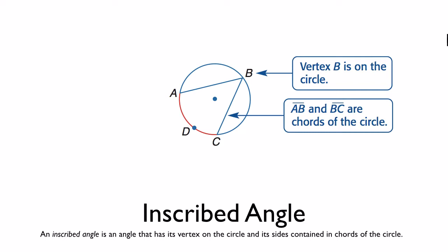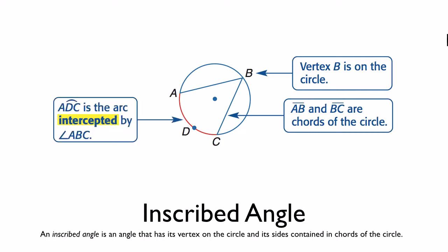So here, angle ABC is an inscribed angle. That red arc, arc AC, is an intercepted arc. In other words, the inscribed angle cuts off a portion of the circle — it intercepts it — and that portion of the circle in the interior of the inscribed angle is arc AC.